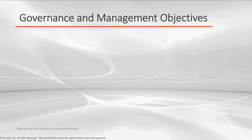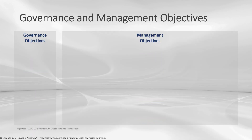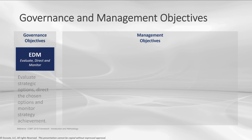Governance and management objectives — every organization needs to meet these. There are 40 governance and management objectives broken up into two large domains: the governance domain and the management domains. On the governance side, we see EDM — Evaluate, Direct, and Monitor. That's where, as a governing body, we are evaluating our strategic options, directing our decisions, and monitoring the achievement towards outcomes and meeting those objectives.